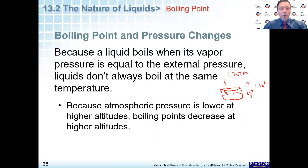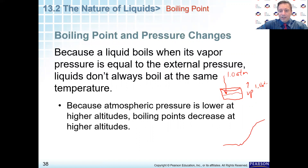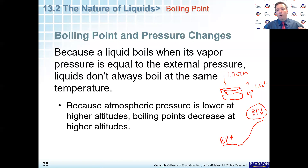Because atmospheric pressure is lower at higher altitudes, boiling point decreases at higher altitudes. So if you're at sea level and you go up into a mountain, the boiling point is going to be lower up at the top than at sea level. At the top, you have fewer particles of air, and therefore less atmospheric pressure.